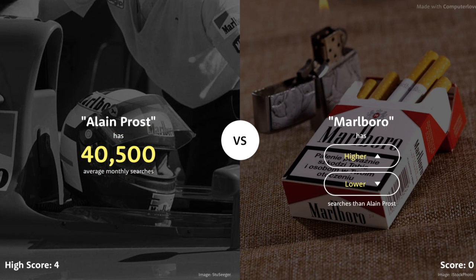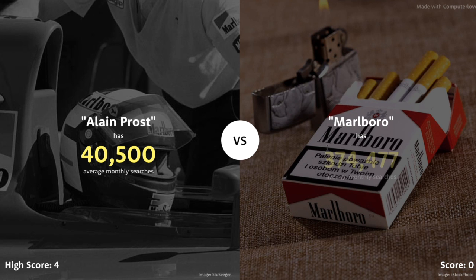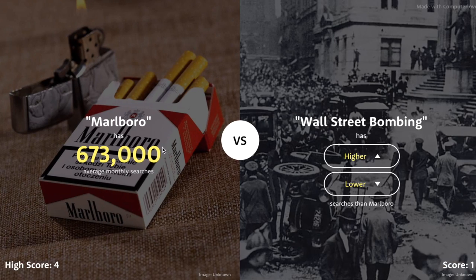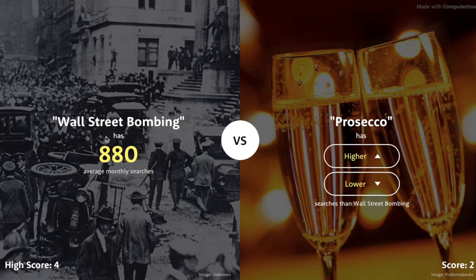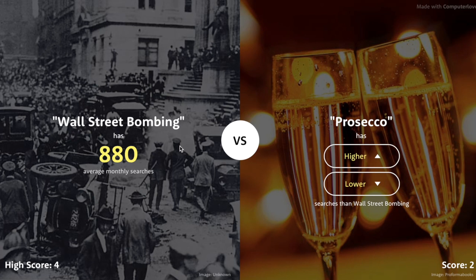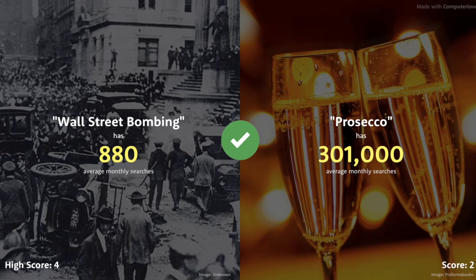Marlboro Cigarettes or Alan Porris — I have no idea who that guy is, and cigarettes are unfortunately pretty popular nowadays. 673,000 searches versus the Wall Street Bombing — I don't know what that is so I'll say lower. Wow, 880 — that is extremely low, probably the lowest one we're going to see in this game.